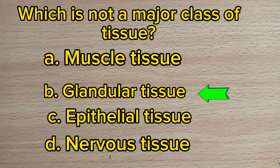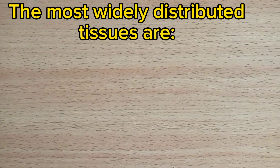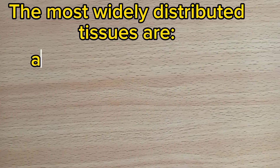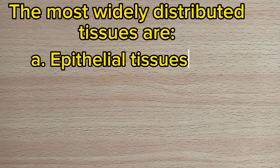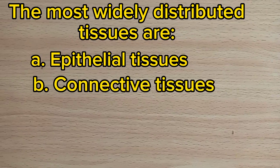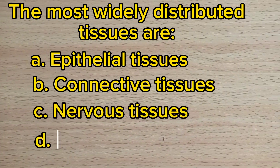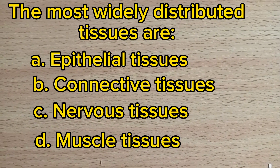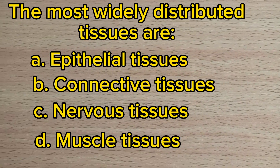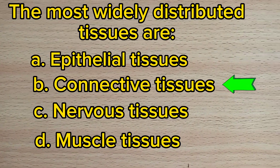Number 2. The most widely distributed tissues are: A. Epithelial tissues. B. Connective tissues. C. Nervous tissues. D. Muscle tissues. Answer: B. Connective tissues.